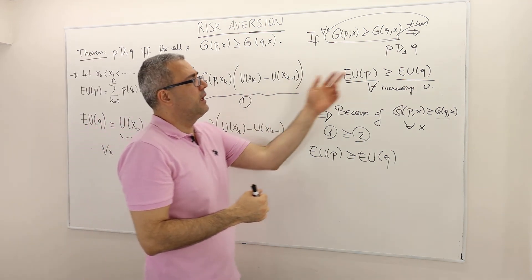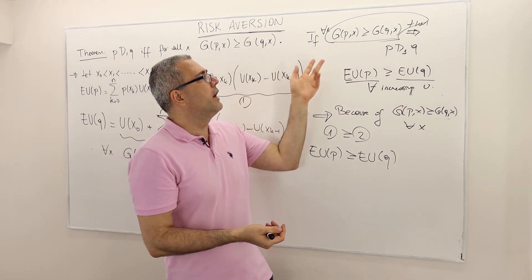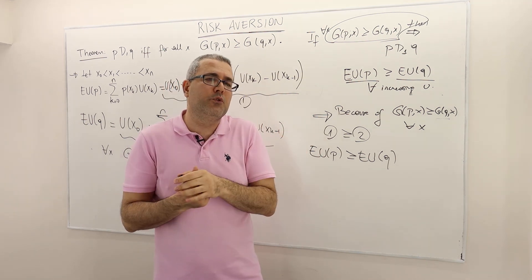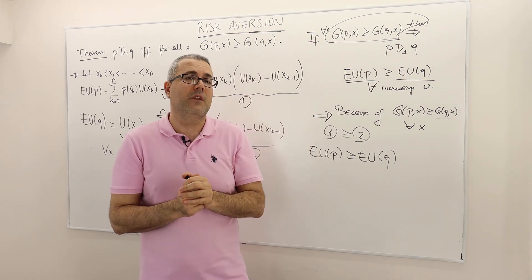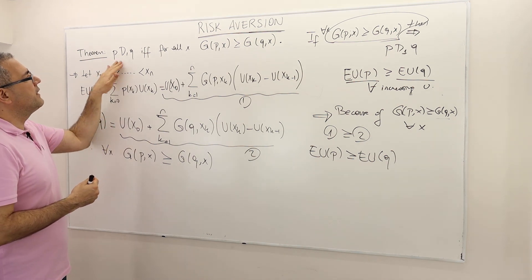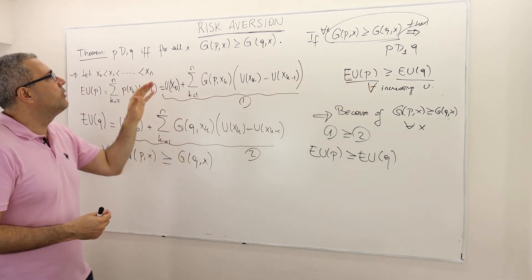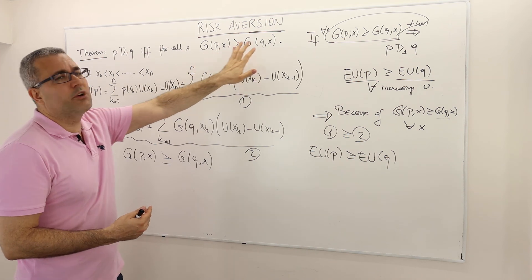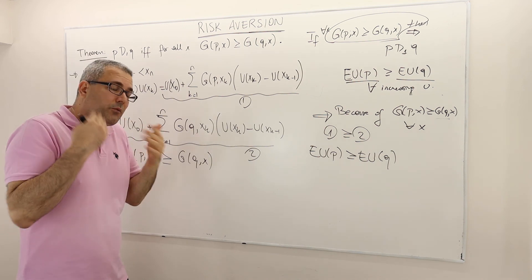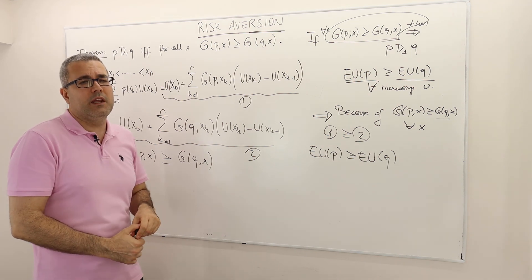The second direction — assuming P is first-order stochastically dominating Q and showing G of P(X) ≥ G of Q(X) — I'm going to skip, but it's easy to prove by contradiction. So that's how we prove this theorem. The lesson is: you don't have to worry about all increasing utility functions. All you have to do is calculate those G parameters for each lottery and compare them for every X to determine whether P or Q is first-order stochastically dominating the other.